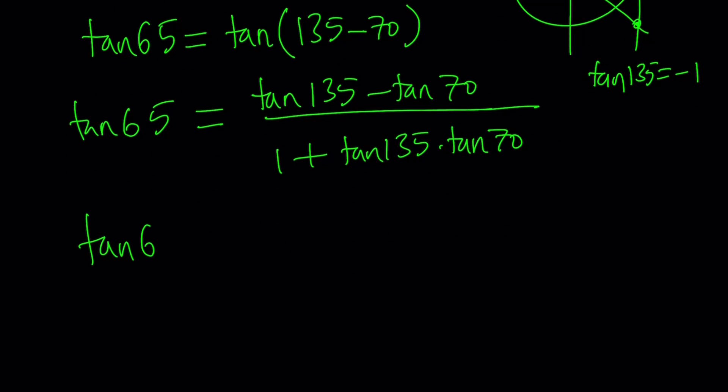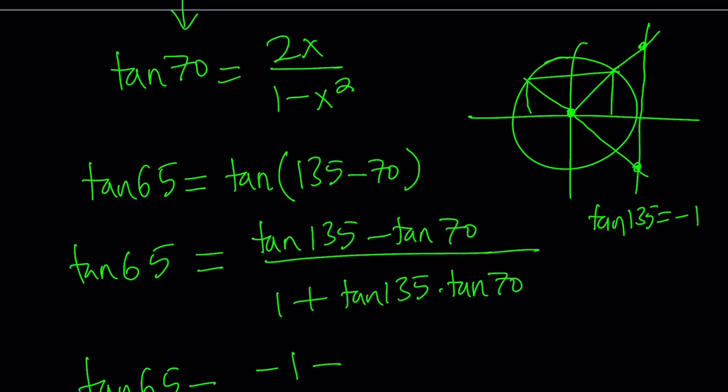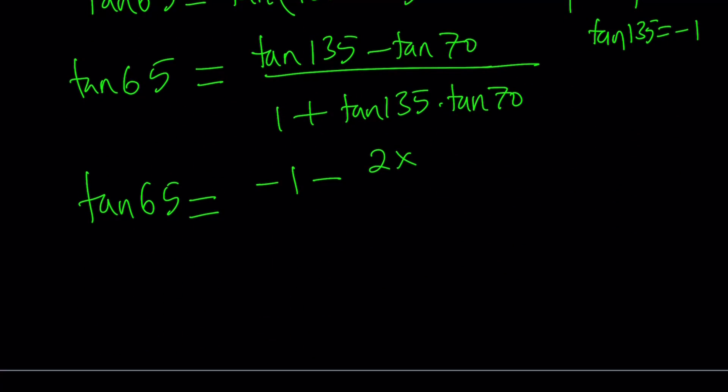So, from here, tangent 65 becomes tangent 135, which is negative 1, minus tangent 70, which we found from tangent 35 as 2x over 1 minus x squared. That is divided by 1 plus negative 1.